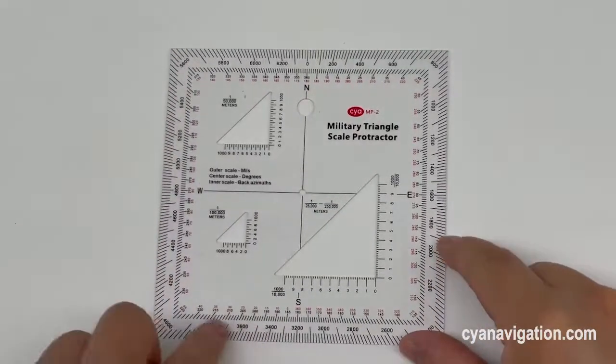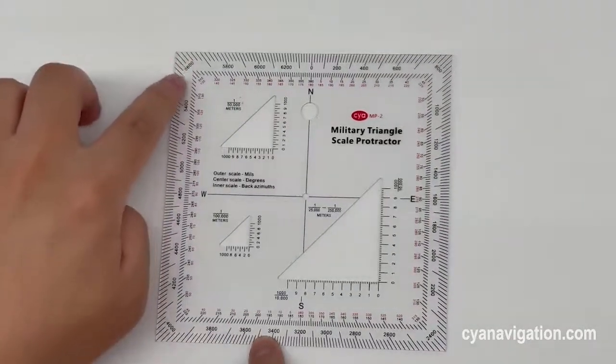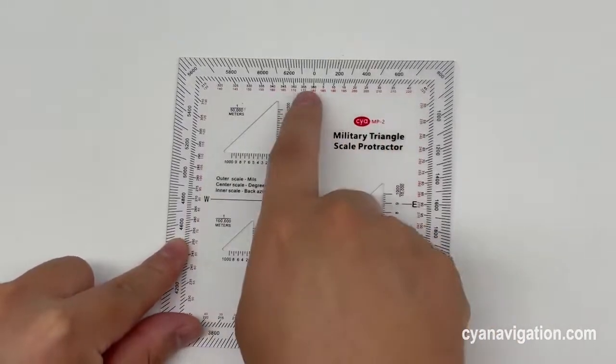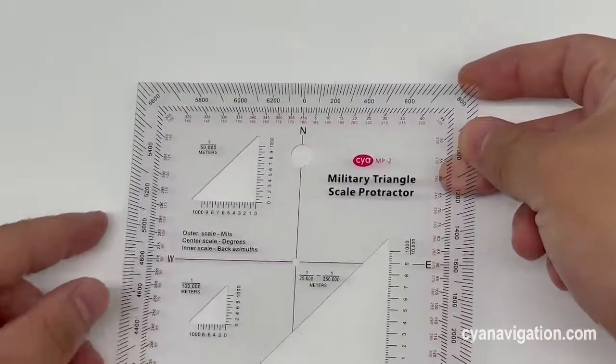The outer scales show the mils, and the center scales in black are for degrees.